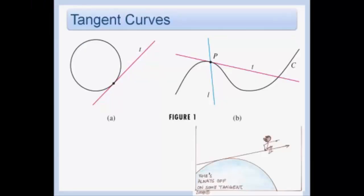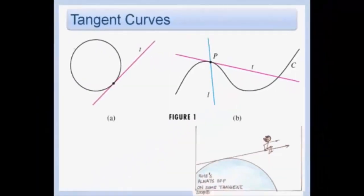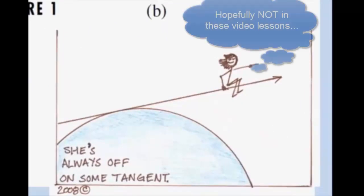First we're going to look at some examples of tangent curves. When I usually ask what is a tangent to a curve, I usually get the answer that it's a line that hits a curve in exactly one spot. In both figure A and figure B, these are both tangents. In figure A, line T is tangent to our circle. In figure B, line T is tangent to curve C. Clearly there's an error in that definition, because this red line is tangent to curve C at point P but intersects the curve in two spots. So we need to talk about what we mean by tangent.